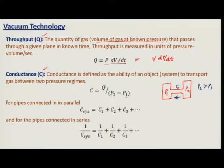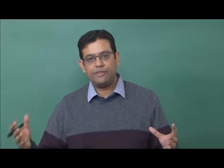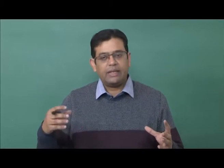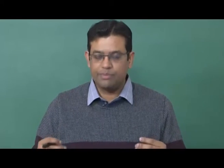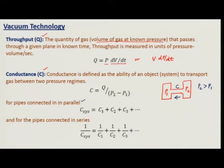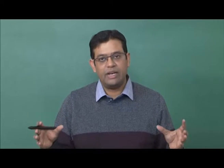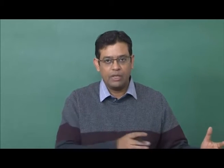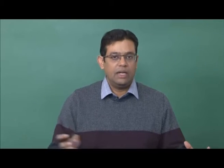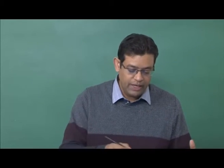In a vacuum system, you will always connect your chamber to a vacuum pump through pipes and valves, and there will be different conductances for each unit. If all these pipes or systems are in parallel, the overall conductance adds up; if they are in series, it is the inverse addition. We want to have higher conductance so that we can easily pass gas between two systems — our chamber and the vacuum pump.